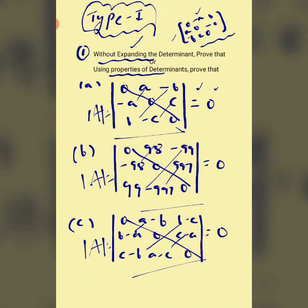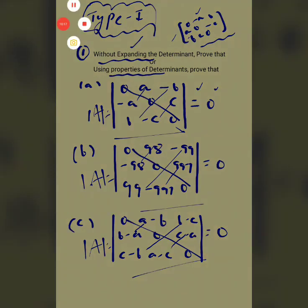So this is my Type 1 category of questions — the case of skew-symmetric matrix of odd order, where the determinant is zero. We will discuss the next type in the next video. Thank you.